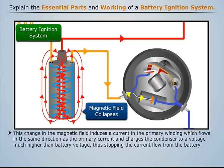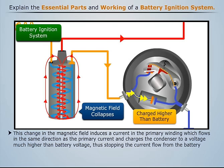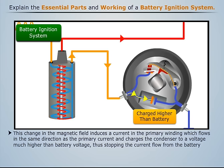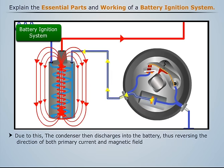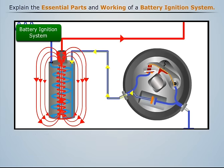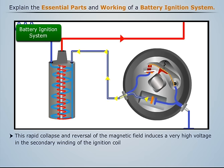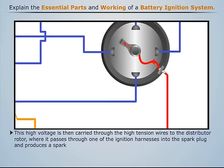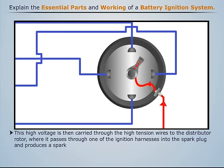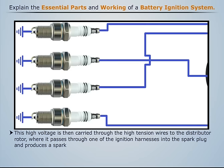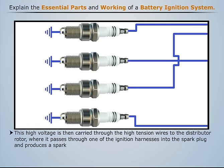This change in the magnetic field induces a current in the primary winding, which flows in the same direction as the primary current and charges the condenser to a voltage much higher than battery voltage, thus stopping the current flow from the battery. The condenser then discharges into the battery, reversing the direction of both primary current and magnetic field. This rapid collapse and reversal of the magnetic field induces a very high voltage in the secondary winding of the ignition coil. This high voltage is then carried through the high tension wires to the distributor rotor, where it passes through one of the ignition harnesses into the spark plug and produces a spark.